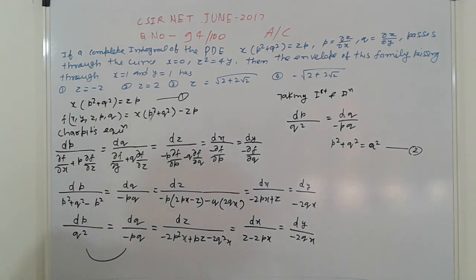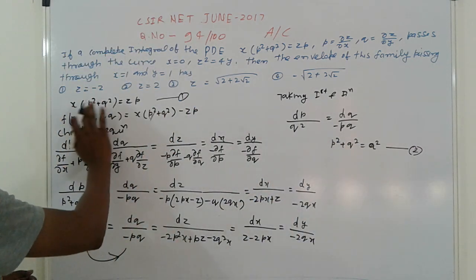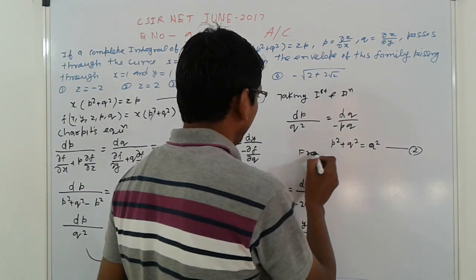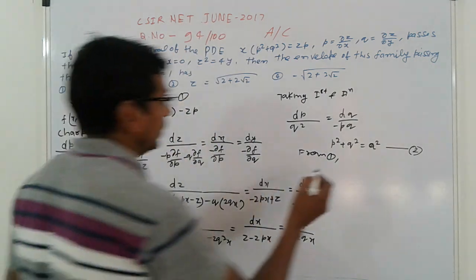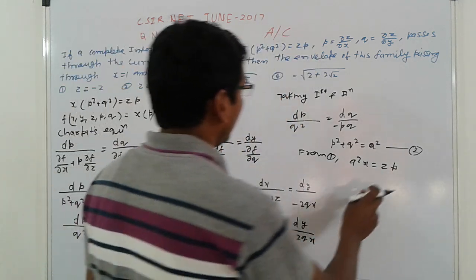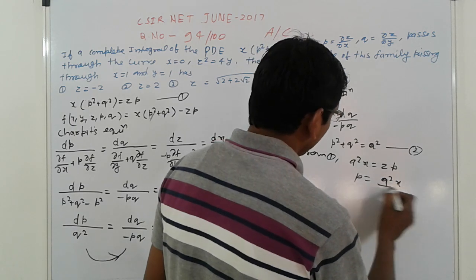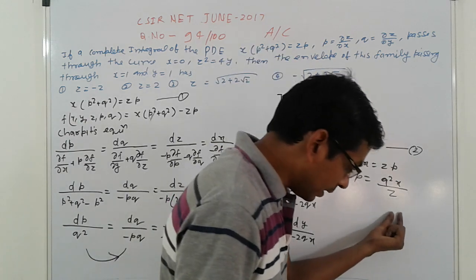Taking the first two Charpit equations and simplifying, we get p² and q² relations. From this simplification, we arrive at the result: a²x = z·p, therefore p = a²x / z. That is the value of p.